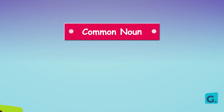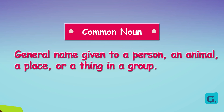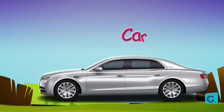This brings us to the types of noun. Today we'll be looking at common noun and proper noun. What is a common noun? A common noun is the general name given to a person, an animal, a place or a thing in a group. For example, car — car is the general name given to a four-wheel vehicle.